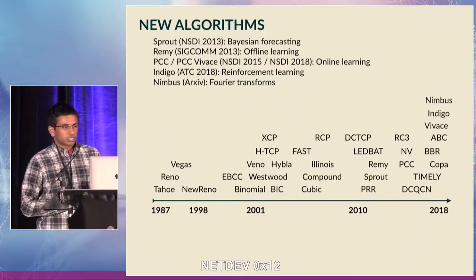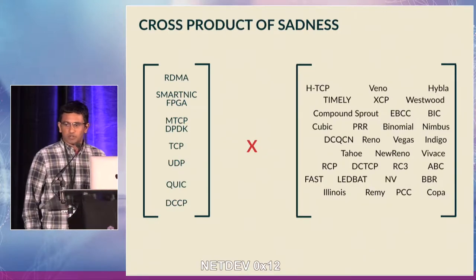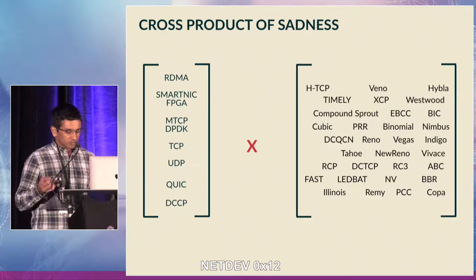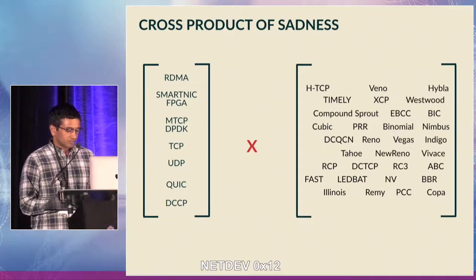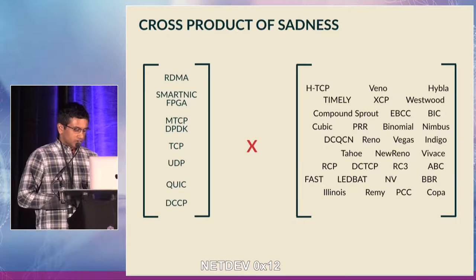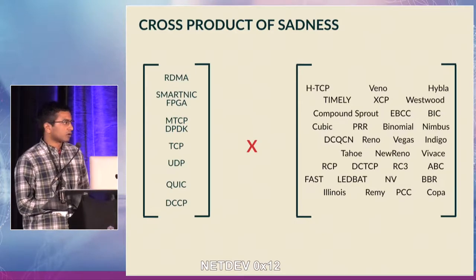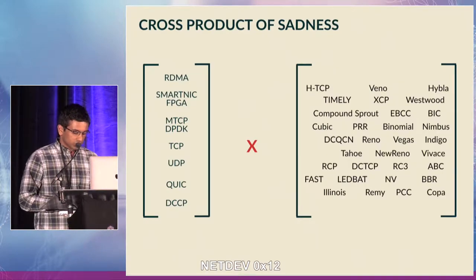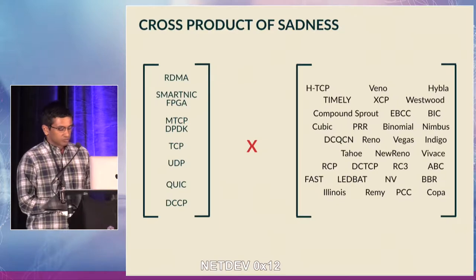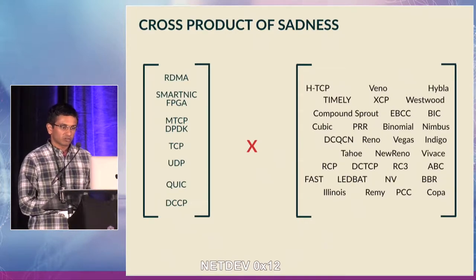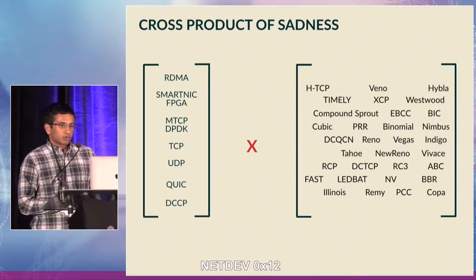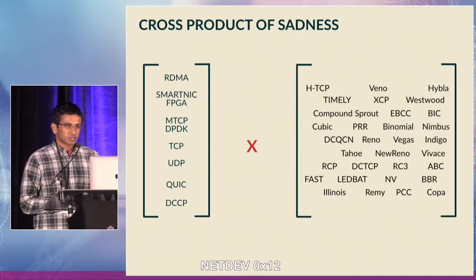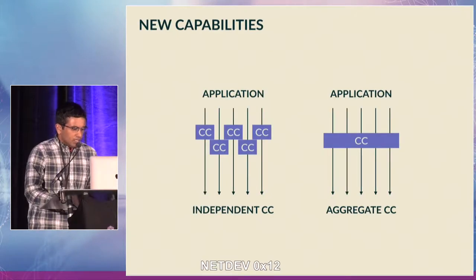This explosion of development in congestion control leads to what I'd call the cross product of sadness. A congestion control developer must learn the ins and outs of each datapath — how pacing works, queue disciplines, the various layers of queuing — to successfully implement their algorithm. When a new datapath comes along, you have to start all over again. The BBR implementation on QUIC took several months even after the Linux implementation was stable. Finally, tying congestion control to the datapath makes evolving new capabilities difficult — for example, the congestion manager proposal for per-user congestion control was hard to implement in Linux and required application changes.